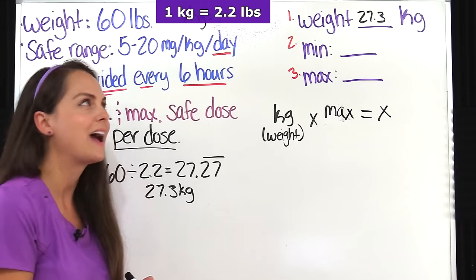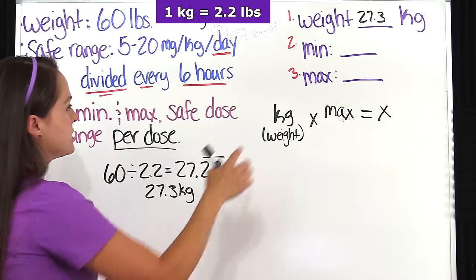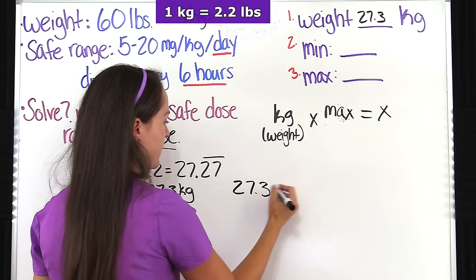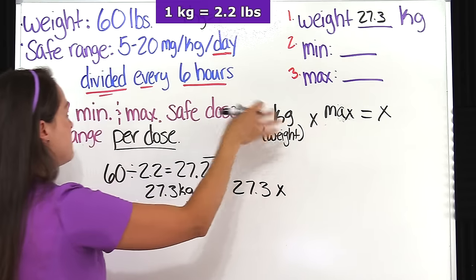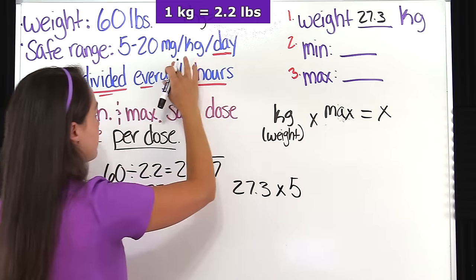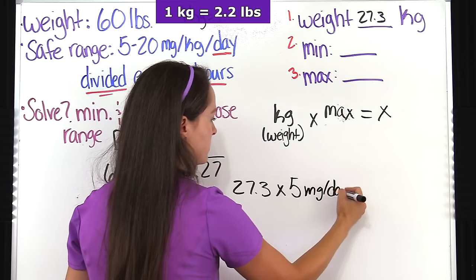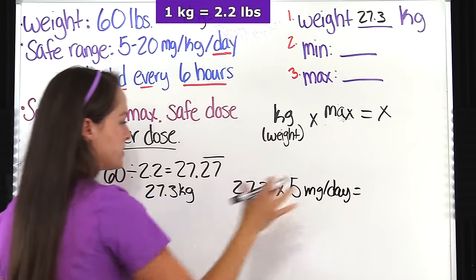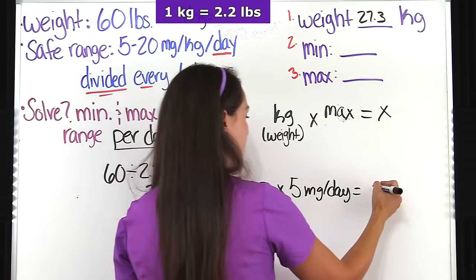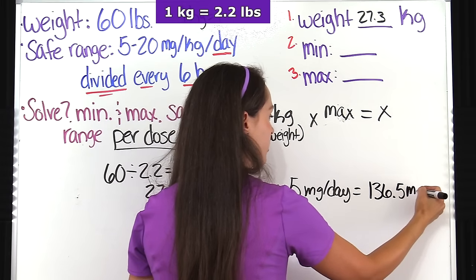Let me plug it in so you can see how it looks. For the minimum: the patient's weight in kilograms is 27.3, multiplied by the minimum of 5 milligrams per day. When we multiply that out — 27.3 times 5 — we get 136.5 milligrams per day.